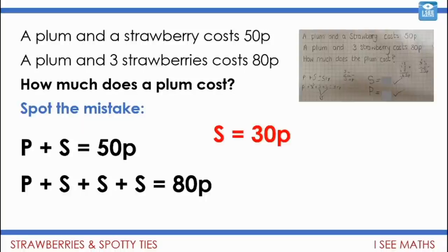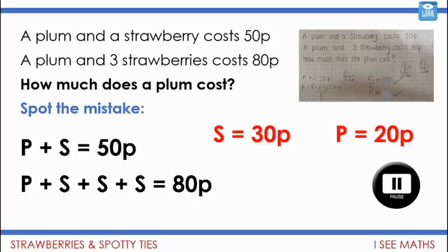And if a strawberry is 30p, then a plum must be 20p. Okay. Pause the video. Where was the mistake?